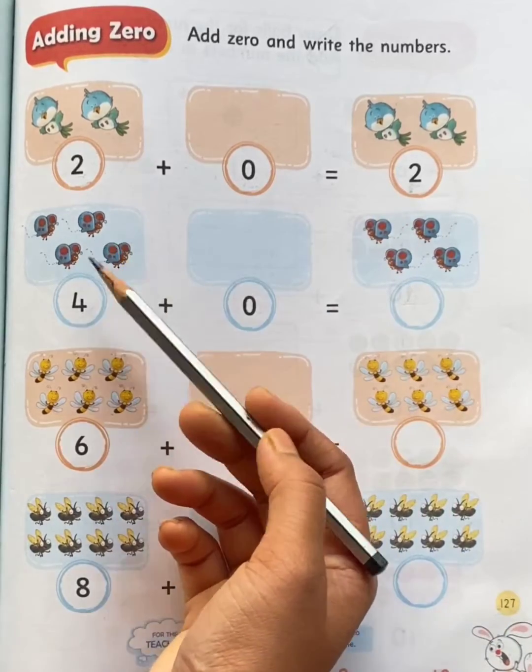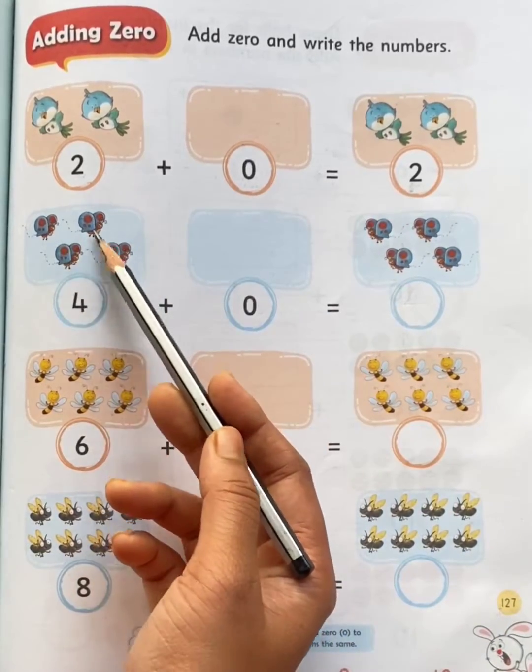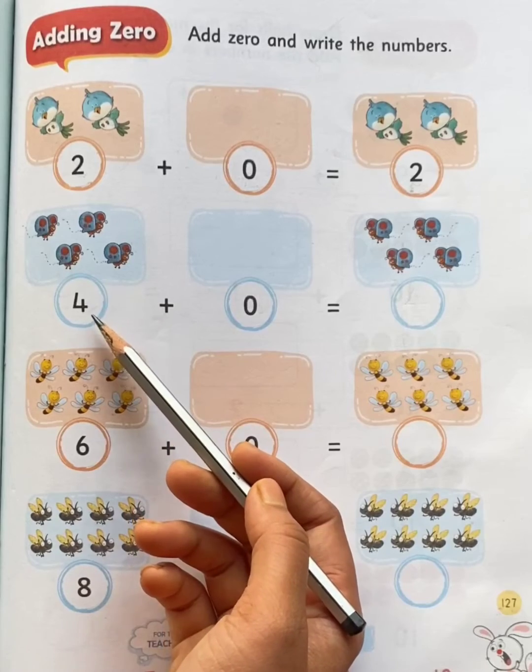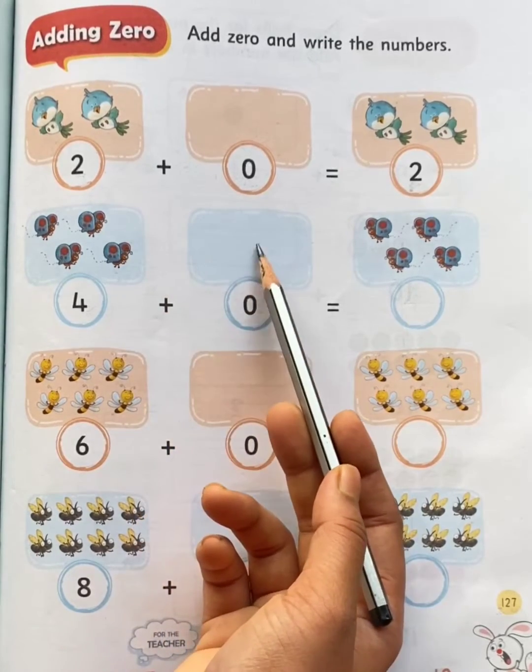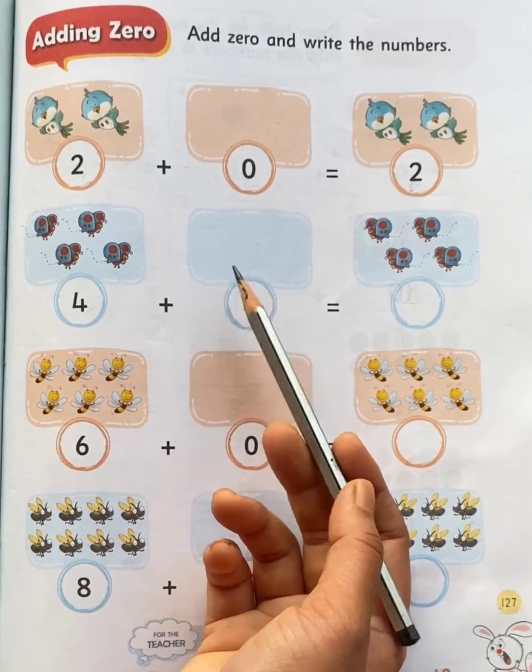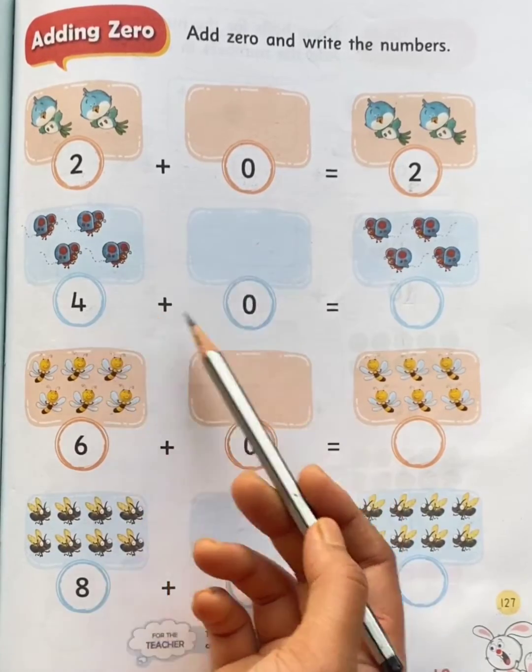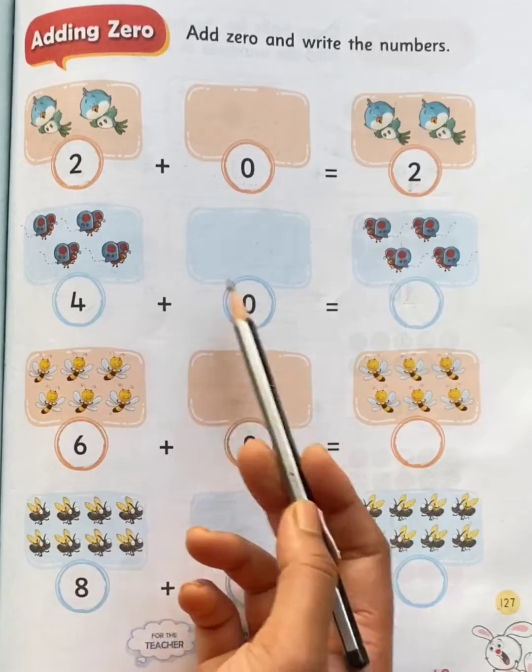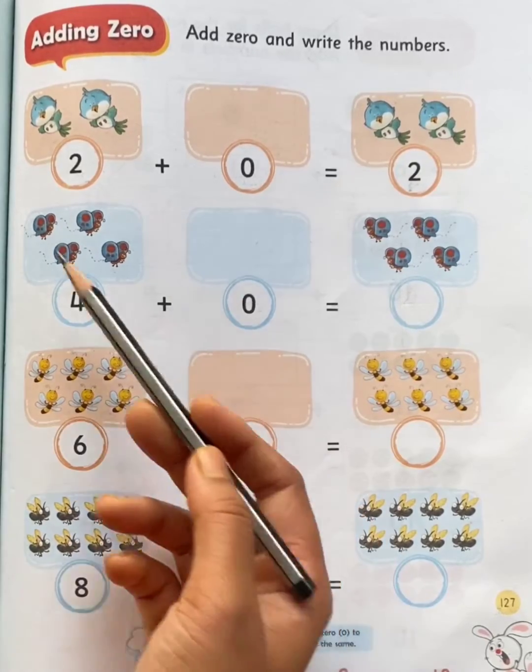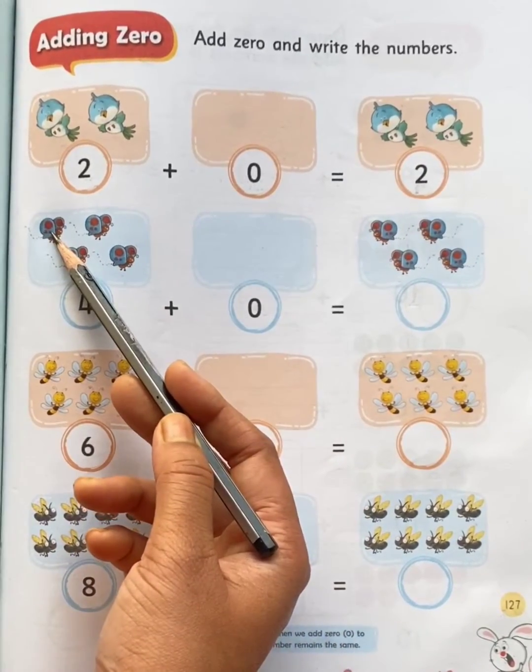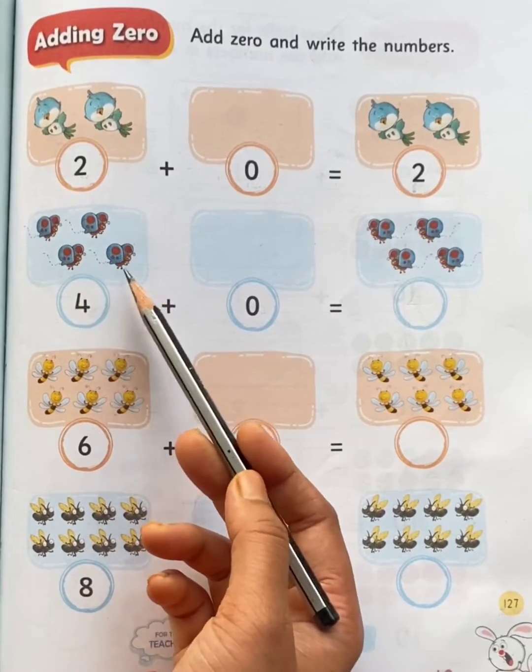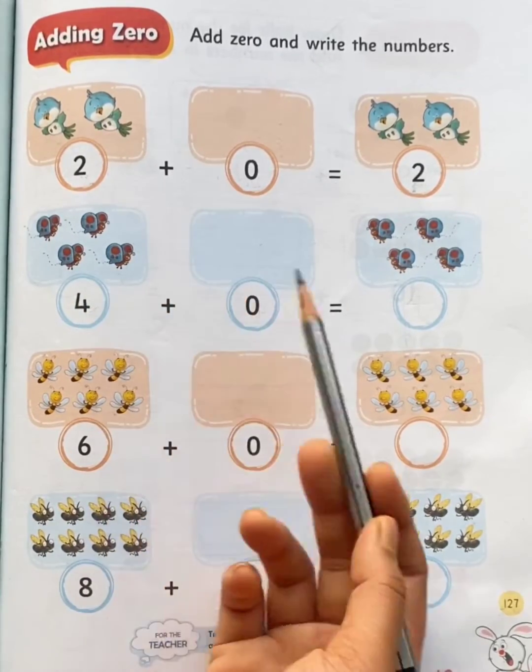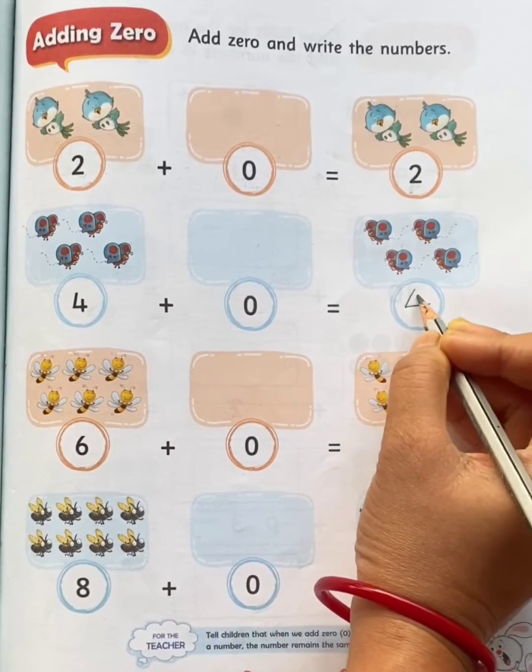Now look here. There are one, two, three, four, four butterflies in the first set and zero butterflies in the second set. So how many butterflies are there in both the sets in all? Yes, one, two, three, four, four butterflies. Thus there are four butterflies in all.